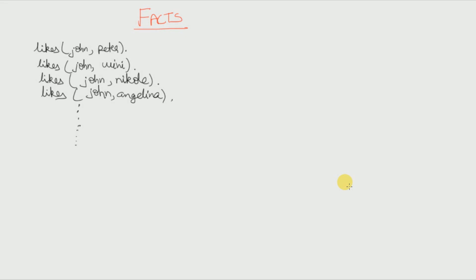Hello friends, welcome to TechDose. In this lecture I will show you what rules are in Prolog. I have already written some facts for an example. Suppose we want to mention that John likes Peter, John likes Winnie, John likes Nicole, Angelina, and so on — meaning John likes everyone in our database. For this we would have to write all the facts corresponding to each person individually, which is very tedious. If there are 10, 20, or even a thousand people, we need to write thousands of lines.